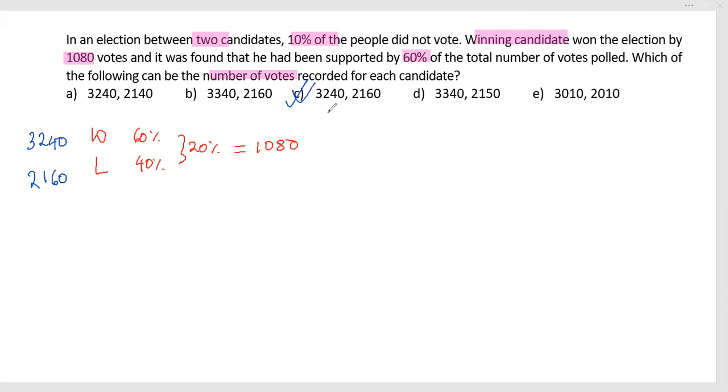Now this is our conventional method, a conventional shortcut method. But there's another type of shortcut from the options. As options are given, without solving it, I know that 1080 is the gap between them.